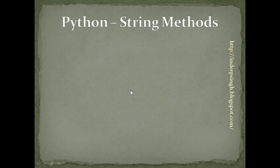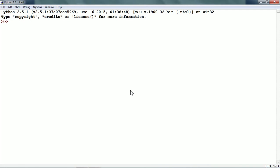Hello and welcome to Python tutorial 9 on string methods. Python has built-in methods for all string operations. Let us see the most useful ones now. First of all, I am going to create a string variable. The name of the string variable is 'name' and I am assigning some string to it.